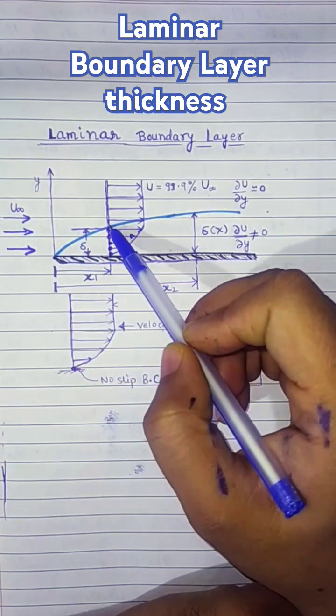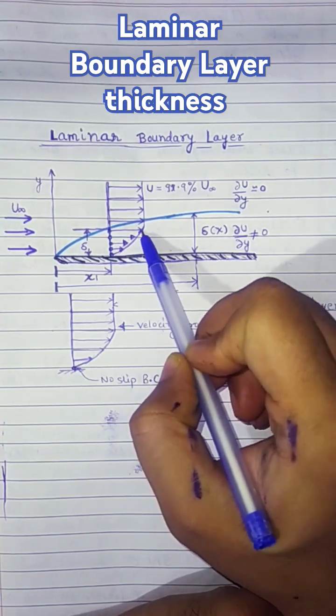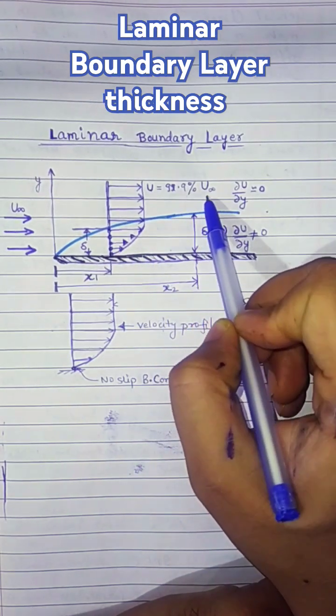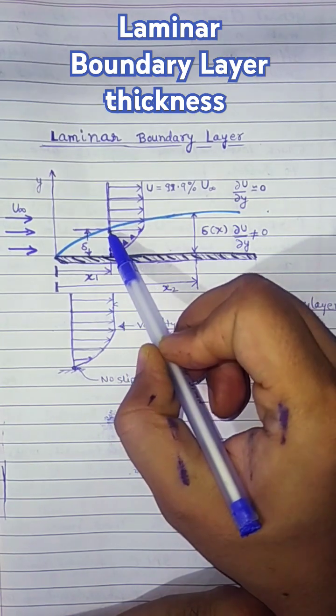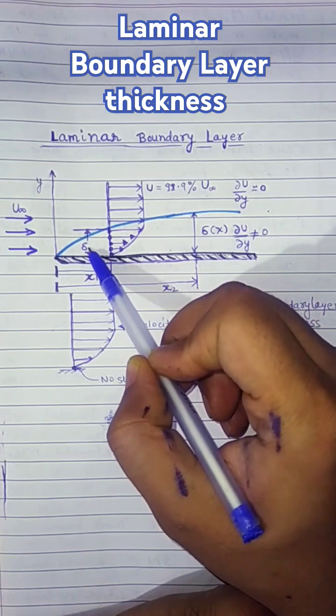But at a certain distance away from the wall, the fluid particle will reach the free stream velocity, or 99% of the free stream velocity, and the distance in which the velocity changes from zero to 99% of the free stream velocity is called the boundary layer thickness.